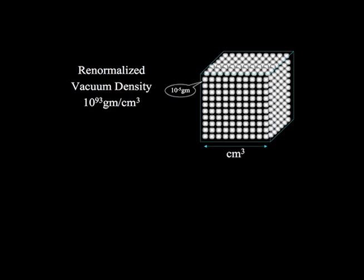That is an enormous number. You might have noticed in your bank account that every time you add a zero, it makes a big change. Imagine that you have 50-some zeros and you keep adding — at 93 zeros, you've got the density of the vacuum.